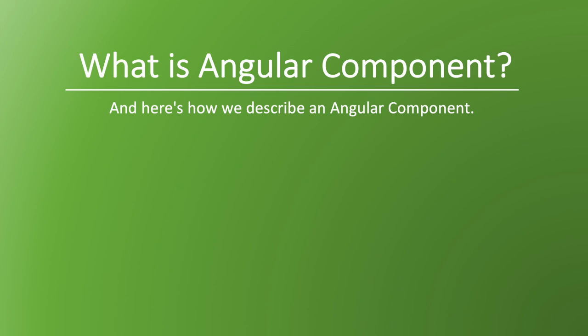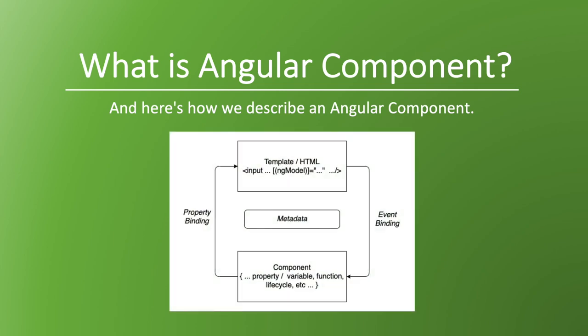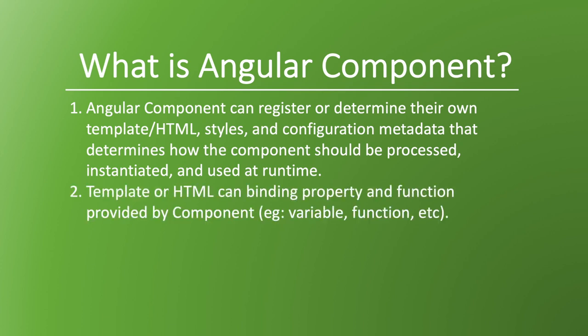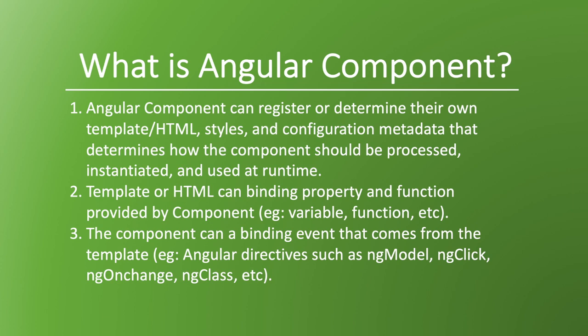Here is how we describe Angular components. First, Angular components can register or determine their own template, HTML styles, and configuration metadata that determines how the component should be processed, instantiated, and used at runtime. Second, the template or HTML can bind properties and functions provided by components, such as variables and functions. Third, the component can bind events that come from the template, for example Angular directives such as ng-model, ng-click, ng-on-change, ng-class, etc.